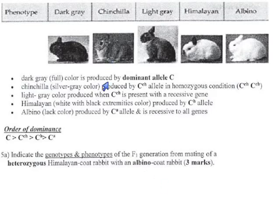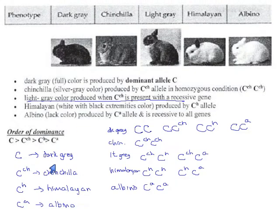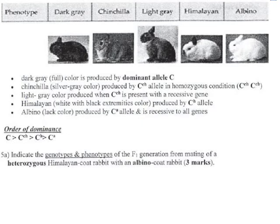Indicate the genotypes and phenotypes of the F1 generation for mating of a heterozygous Himalayan coat. Let's just flip back here. Here's the two ways you can be Himalayan. Double Himalayan, that's what we'd call the homozygous one. Or the heterozygous is C^h C^a. So heterozygous Himalayan here means C^h C^a.